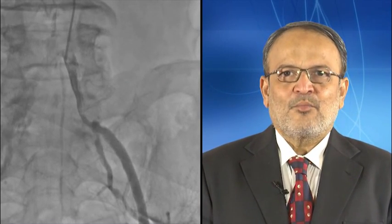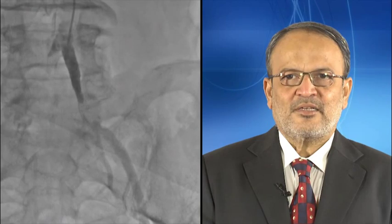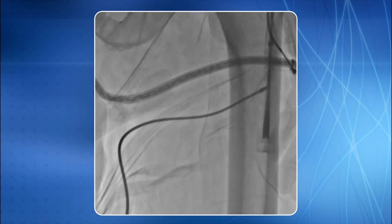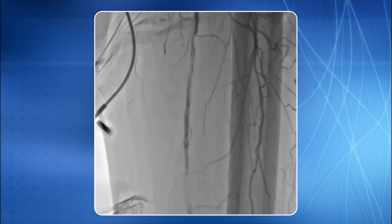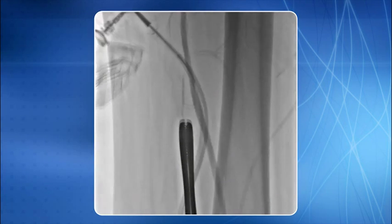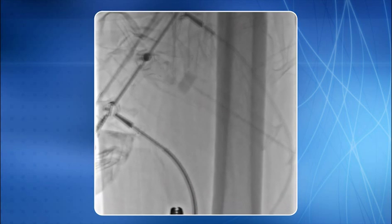Now I will show you an interesting case in which we addressed both iliac lesions along with both superficial femoral artery lesions using left transradial approach. Contrast injection through the diagnostic catheter revealed both iliac lesions. Left common iliac stenting was done using a self-expanding stent, with a satisfactory stent result revealed. Left superficial femoral artery stenosis is profiled — note that it is a very long lesion. A long balloon was deployed and low-pressure dilatation at 6 atmospheres was given for 2 minutes, with a satisfactory result of left SFA ballooning.